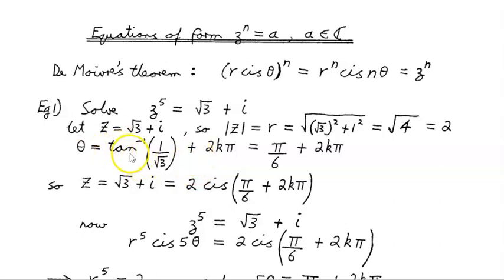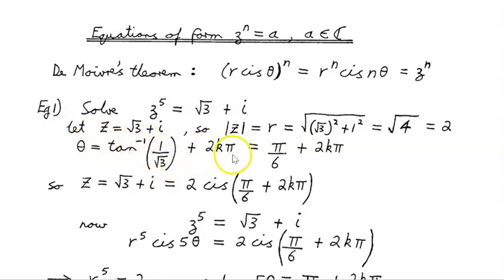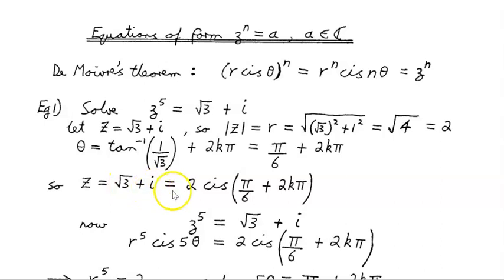The general argument — not just the principal argument — is inverse tan(1/√3) plus 2kπ, for every revolution. Inverse tan(1/√3) is π/6, so the general argument is π/6 + 2kπ. So Z = √3 + i gives us 2 cis(π/6 + 2kπ).